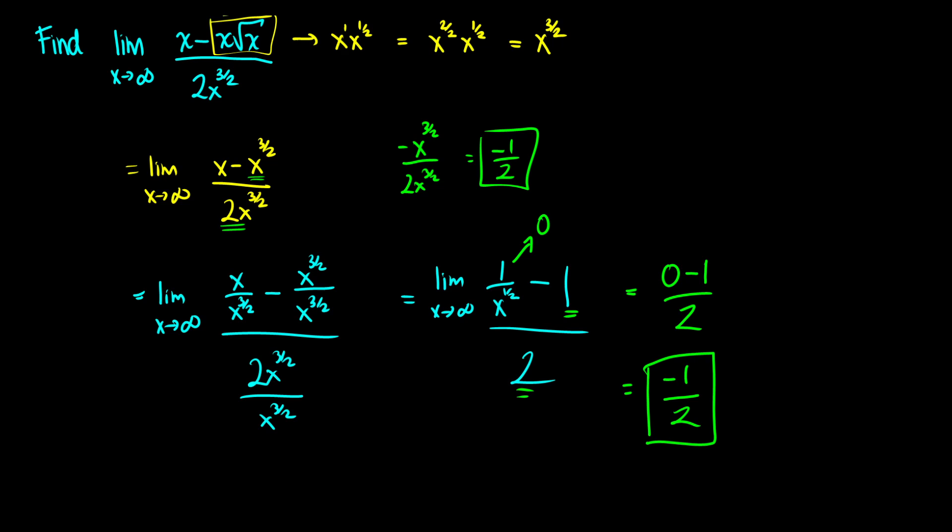From now on I'm just going to compare the highest power if it's a simple polynomial — and this isn't really a trick, it's just an understanding of function growth. The limit as x approaches infinity depends on the ratio of the numerator and denominator. If the denominator grows faster, the ratio tends to 0. If the numerator grows faster, we get infinity or negative infinity. It's only when both grow at the same rate that we get a finite numerical limit.